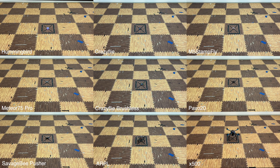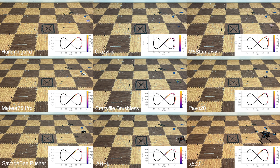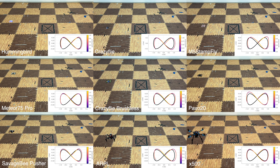Even though the foundation policy is not explicitly trained for agile trajectory tracking, we find that it yields good tracking performance at different levels of agility. Here you can see 9 of the 10 quadrotors tracking a figure-8 trajectory of 1 by 2 meters with a 10-second interval.